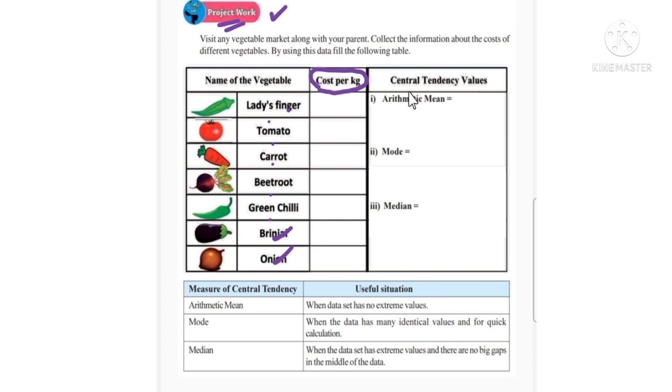After that, what you have to do is calculate central tendency values. Central tendency values - we have three: arithmetic mean, mode, and median. First, arithmetic mean formula should be written in the format.